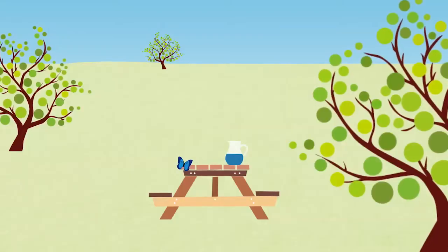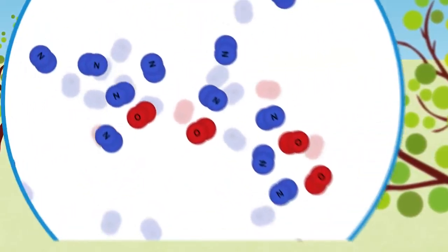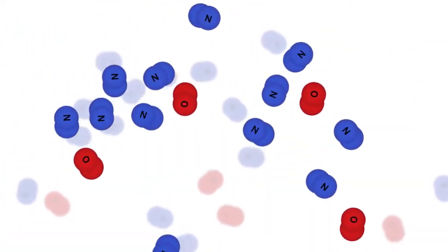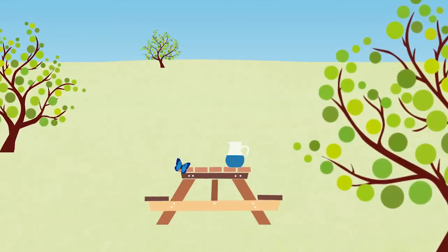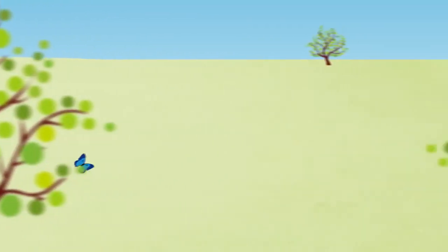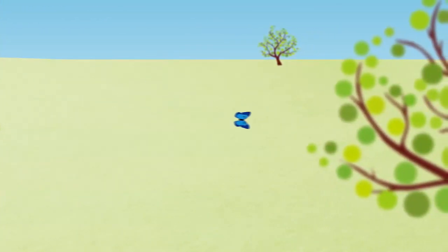Even the air we breathe is made up of atoms. Air on Earth is made up of mostly nitrogen and oxygen molecules. And those molecules are made of atoms. Now when you look at the world around you, try to remember that atoms make up everything you see. Even you. You're made of atoms too. Every single thing is made up of atoms and nothing else.